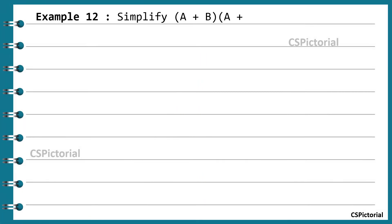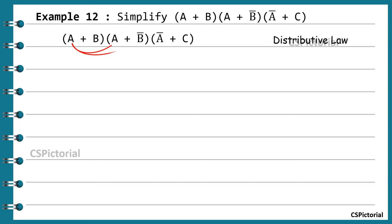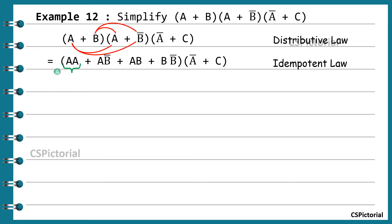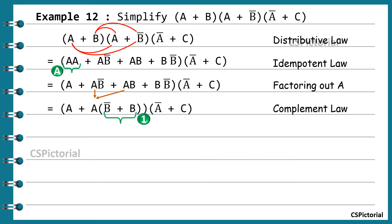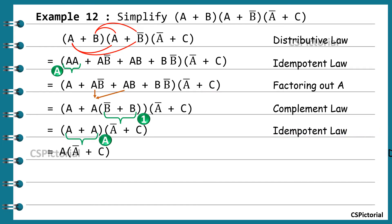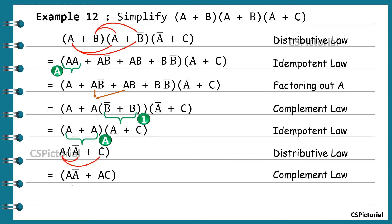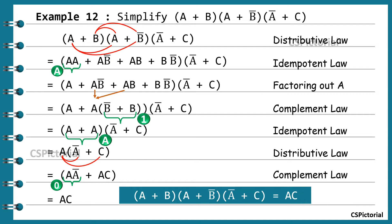Simplify (a+b)(a+b̄)(ā+c). The simplification steps are similar to previous examples — apply the appropriate Boolean laws at each step to reduce the number of terms. The final simplified expression is ac.